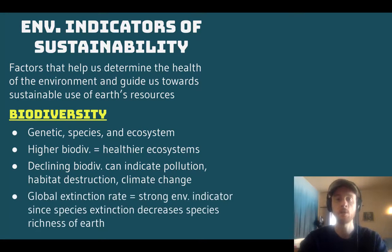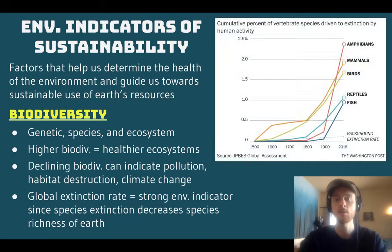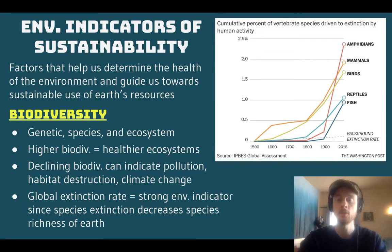Global extinction rate is one of the strongest environmental indicators when it comes to biodiversity. Looking at this graph, compared to the background extinction rate — the rate we would expect based on a stable climate and species going extinct naturally — we are far exceeding those extinction rates right now for pretty much every group of organisms that we measure. This is an indicator that human activity on Earth is not sustainable from a biodiversity standpoint; we're causing extinction of species far faster than it would be expected to occur naturally.